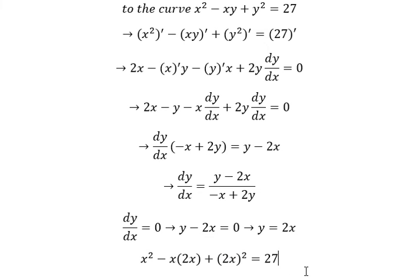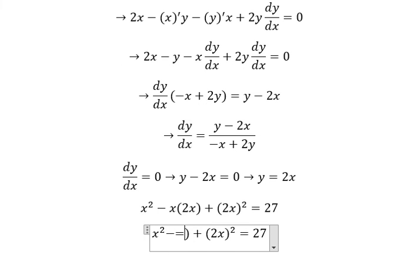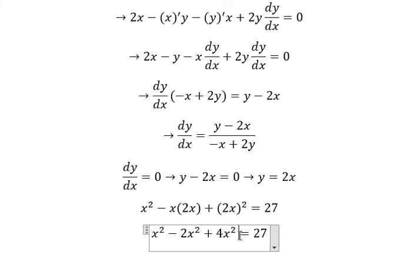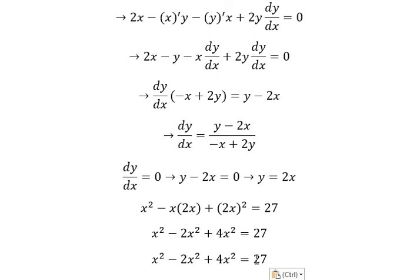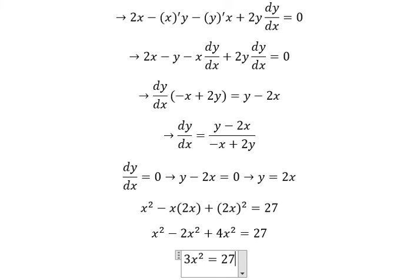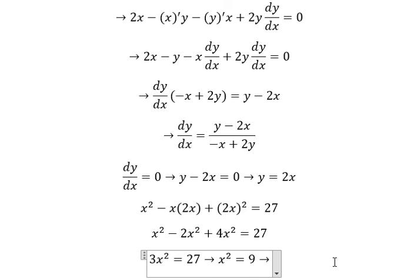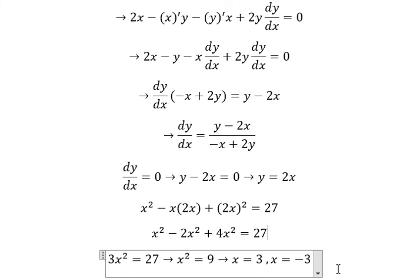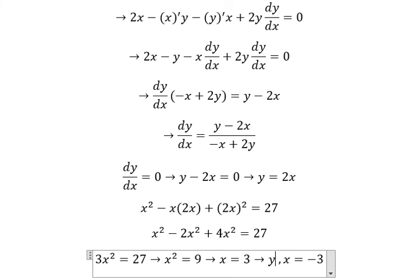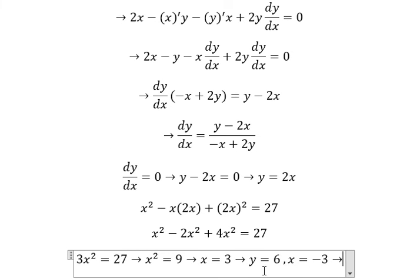Expanding gives us 2x squared and 4x squared. Adding: 1 plus 4 gives 5, then 5 minus 2 gives 3x squared. Dividing both sides by 3, we get x equals 3 and x equals negative 3. Substituting back, y equals 6 and y equals negative 6.